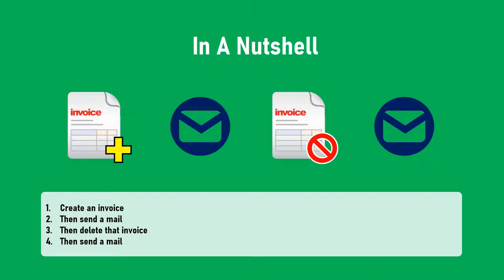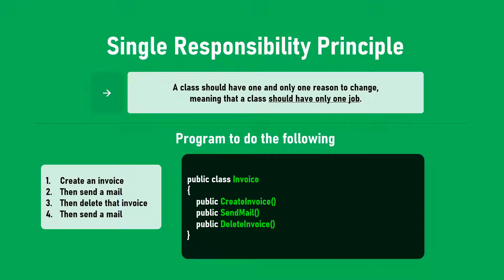Now how would a bad programmer write this? He will create a class called Invoice, then create a function createInvoice, then a function sendMail, and then a function deleteInvoice. He would think: the first step calls createInvoice, the second step calls sendMail, the third step calls deleteInvoice, and the fourth step calls sendMail again.